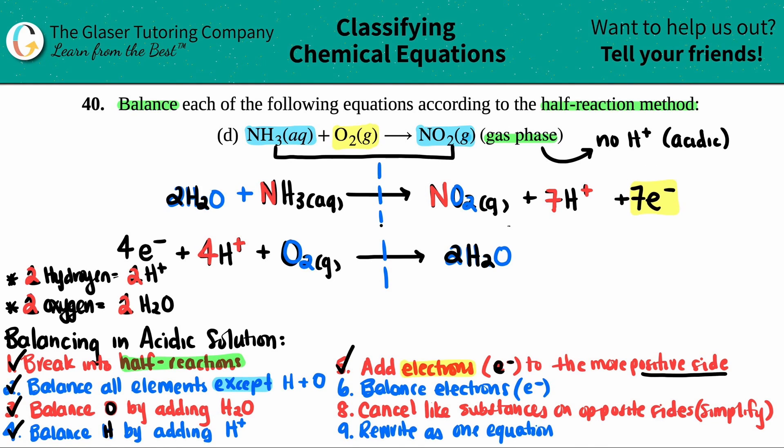Anyway, so we have seven electrons on the right side and we have four electrons on the left side, right? These need to be balanced. We can only balance them by multiplying. What's the closest number or the next number up that they have in common between a seven and a four. Yeah, it's 28, right? If I take seven and I times it by four, I get 28. And if I take the four and I times it by seven, I get 28. So I need to multiply the top equation by four and I need to multiply the bottom equation by seven.